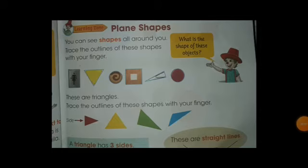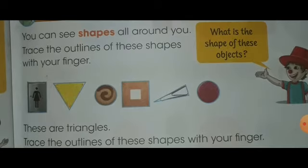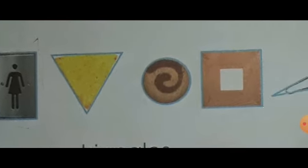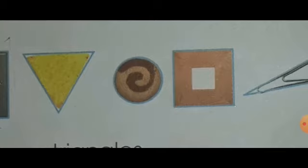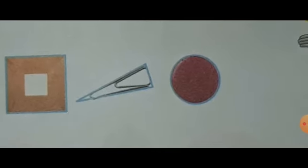Hey students, open your books to page number 89 — plain shapes. What is the shape of these objects? Here you can see the objects. You can see shapes all around you. Trace the outlines of these shapes with your finger. The first one is rectangle, the second one is triangle. The shape of this cookie is circle, then square, triangle, circle.